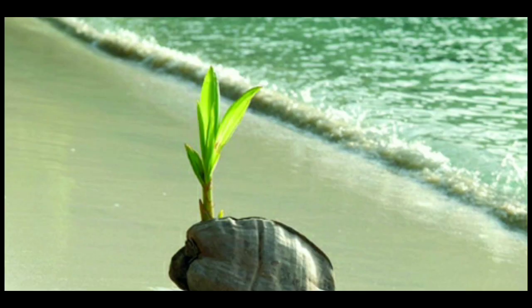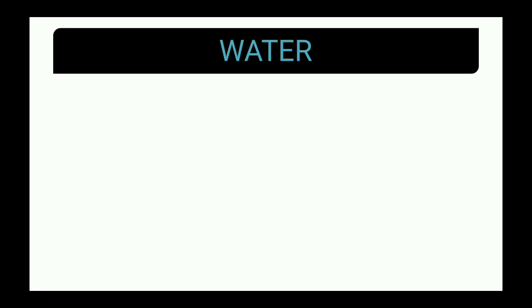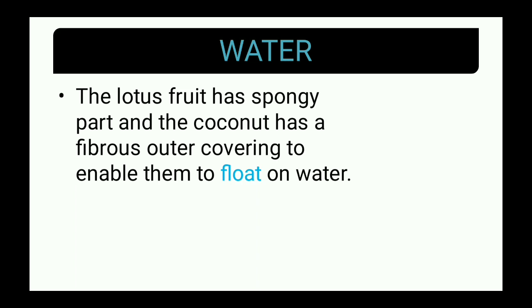Our second agent for dispersal of seeds is water. As you can see on the screen, a coconut — coconut has a fibrous outer covering that allows it to float in water and go away from its parent plant for proper germination. The lotus fruit has a spongy part, and coconut has a fibrous outer covering that enables these seeds or fruits to float on water.